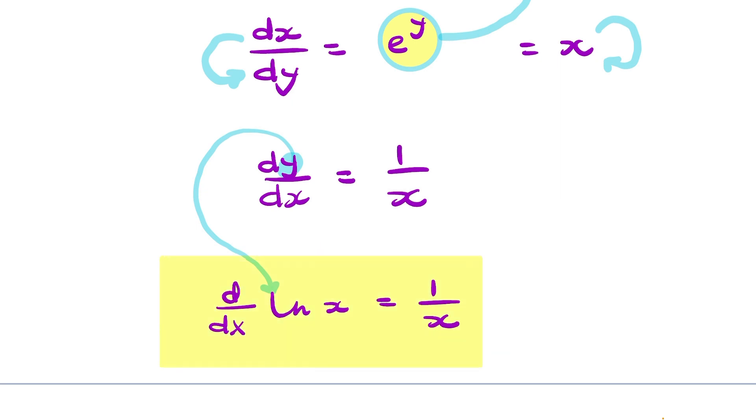That's the proof that the derivative of the natural logarithm is 1 over x.